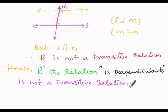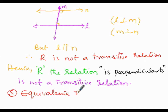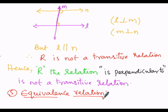Now let us move to the next topic: equivalence relation. The fifth one is the equivalence relation. A relation R is said to be an equivalence relation if and only if it is reflexive, symmetric, and also transitive.